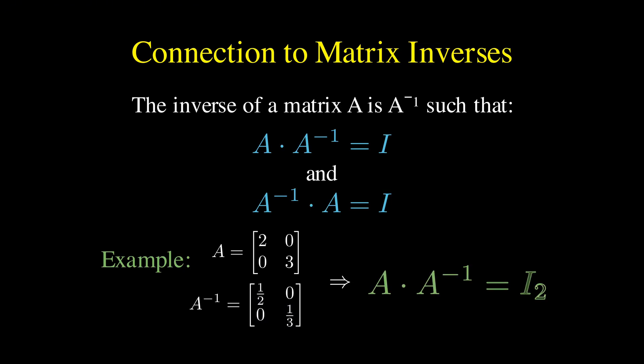The identity matrix also plays a crucial role in understanding matrix inverses. The inverse of a matrix A, denoted A inverse, is defined as the matrix that satisfies A times A inverse equals I, and also A inverse times A equals I. For example, if A is a diagonal matrix with 2 and 3 on the diagonal, then A inverse has one-half and one-third on the diagonal, and their product gives us the identity matrix. This relationship is foundational for solving systems of linear equations and for many other applications.